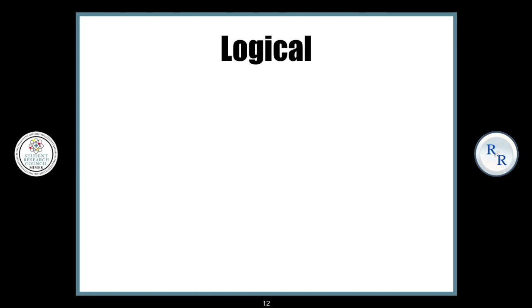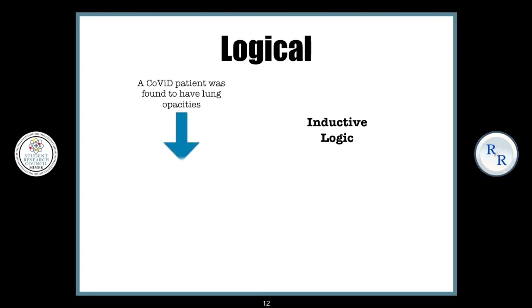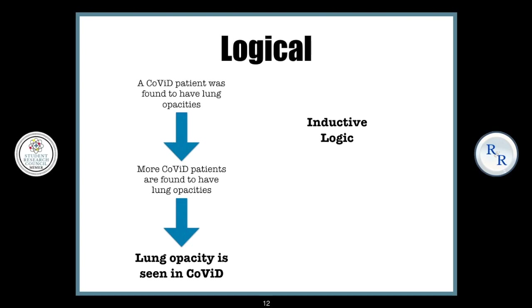This logic in research can be of two types. One is known as inductive logic. For example, a COVID patient was found to have lung opacities — that is an observation. Now if more COVID patients are found to have lung opacities, then you're forming a pattern, which further leads to a theory that lung opacity is seen in COVID. Hence inductive logic goes from an observation to a theory. But the issue with inductive logic is that it can be invalidated — if you find 50 patients with lung opacities and then find the 51st patient without lung opacities, then it is invalidated. An inductive logic can never be proven.